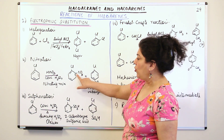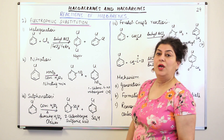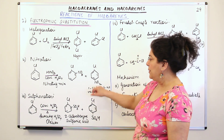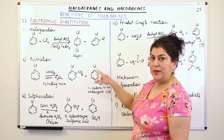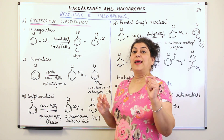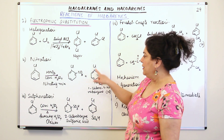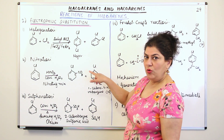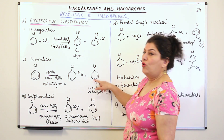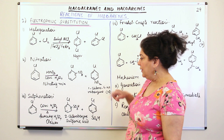You have the nitro group at the ortho-position and at the para-position. When naming these compounds with two substituents, you name the one that is alphabetically lower first. So since you had chlorobenzene, chlorine comes first. The para-product would therefore be named 1-chloro-4-nitrobenzene.